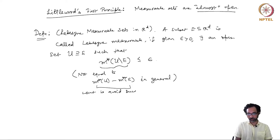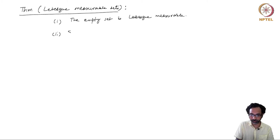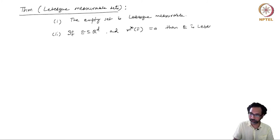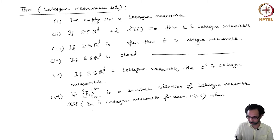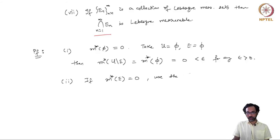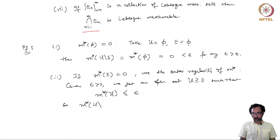Now, we come to a very important concept called Lebesgue measurability. This will allow us to define what we call Lebesgue measurable sets. Recall from one of the first videos in the first week, we mentioned that due to the Banach-Tarski paradox we cannot expect finite additivity to hold for any two arbitrary disjoint sets, and therefore we need to categorize the subsets of R^d into two classes, where measurable sets will be expected to satisfy the finite additivity rule.